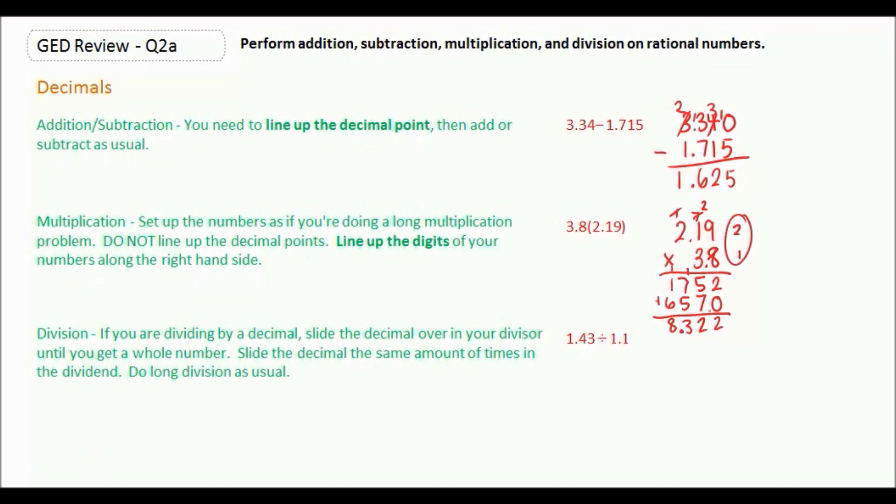Finally, for division, if we're dividing by a decimal, we want to slide the decimal over in our divisor until we get a whole number. And then however many times we slid it over, we're going to do the same thing in the dividend. So we're going to do 1.43 divided by 1.1.